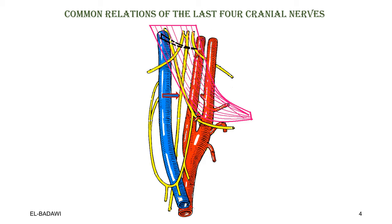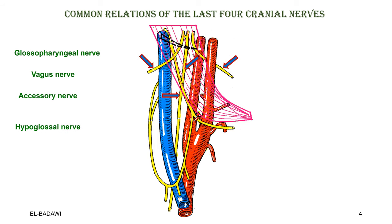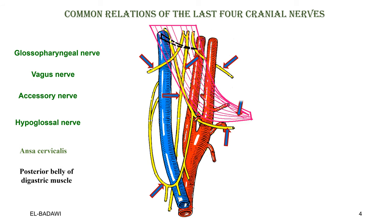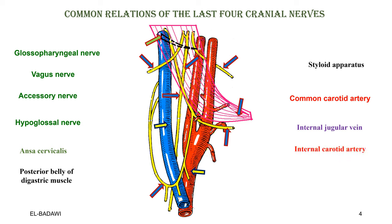Here we can summarize all the relations in this view: the glossopharyngeal, the vagus, the accessory, and the hypoglossal nerve. We can identify the posterior belly of the digastric, the styloid apparatus, the common carotid artery, the internal jugular vein, the internal carotid artery, and the external carotid artery. From this diagram we can see the relations of the last four cranial nerves as they exit the cranial cavity.